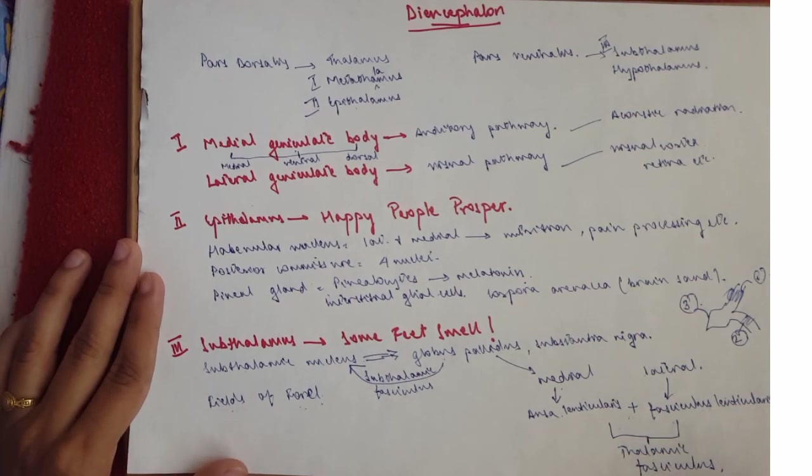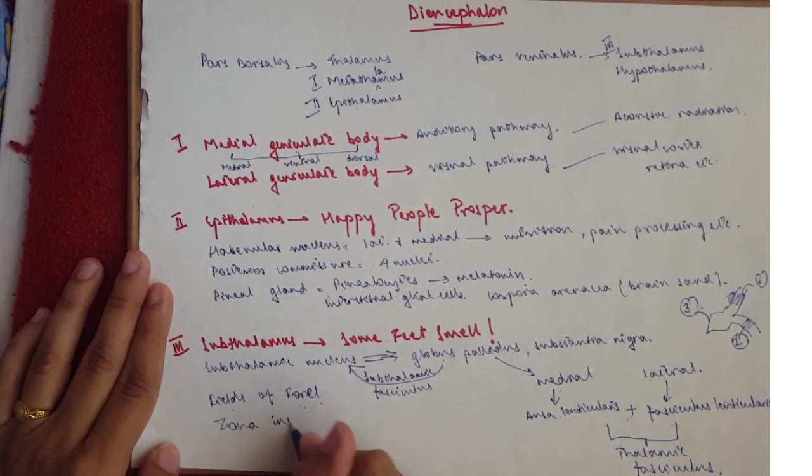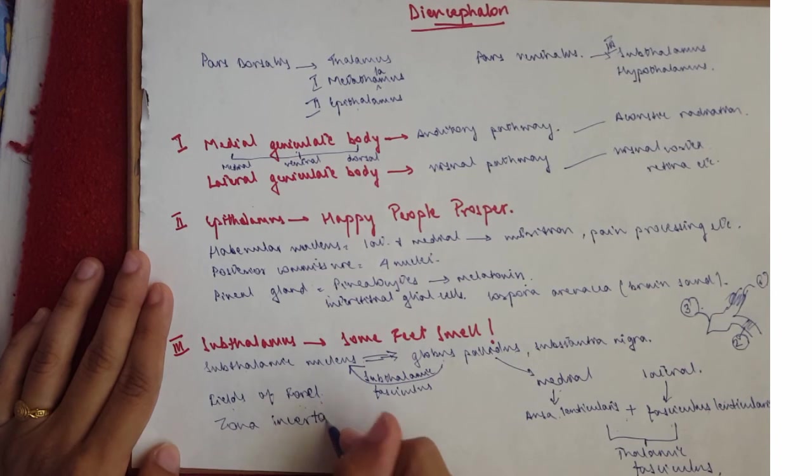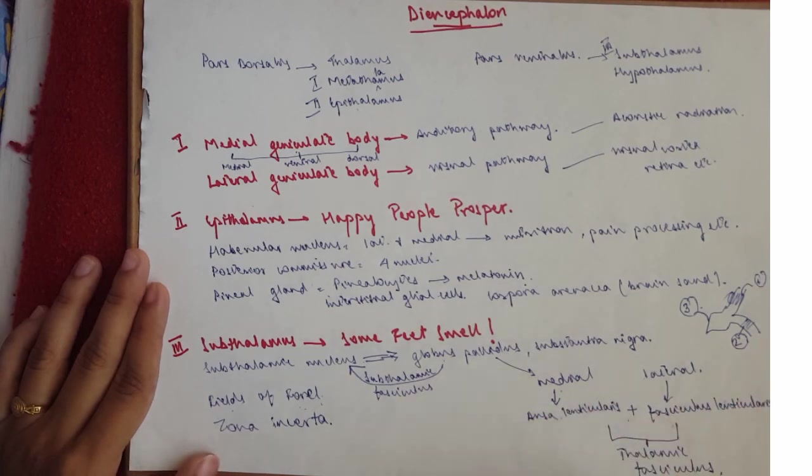I think that is it. And there's another structure which is called the zona incerta. It's just a cluster of cells, but its function is unknown, but it's a structure present in the subthalamus. So it's important for you to know this.